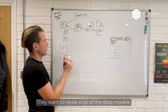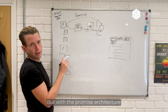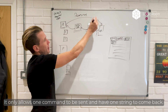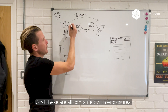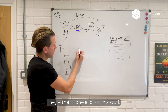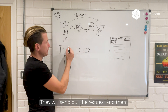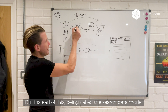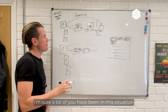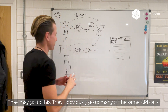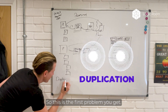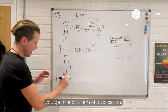They are hit with a problem because what they want to do is reuse a lot of the code, the transformation, and the data models. But with the promise architecture, they can't do that because the promise only allows a single cycle back and forth — one command sent and one response back — and these are all contained in closures, so you can't get access to the data. They're left with two options. They either clone a lot of this stuff: send out the request and bring it back the same way, but now call it the filter search data model instead. This creates the problem of duplication — and this is the first problem you get when you try to scale up a UI architecture.